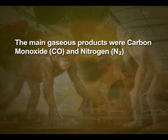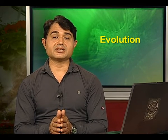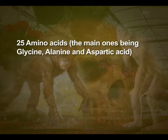Miller found that after a week, most of the ammonia and much of the methane had been consumed. The main gas products were carbon monoxide and nitrogen. In addition, there was an accumulation of dark material in the water. It was clear that the material included a large range of organic polymers. Analysis of the aqueous solution showed that the following had also been synthesized: 25 amino acids, the main ones being glycine, alanine and aspartic acid.